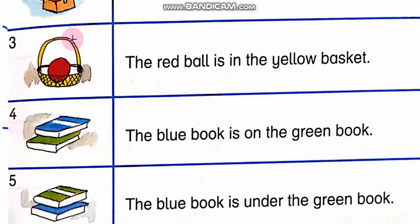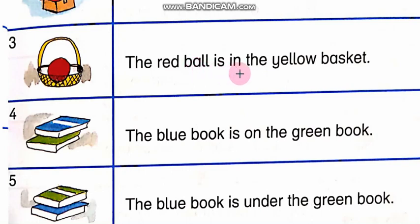In the third picture, yeh ek basket hai jiska color hai yellow, aur ismei ek ball hai jiska color hai red. The sentence will be: The red ball is inside the yellow basket. Red ball yellow basket mein hai.